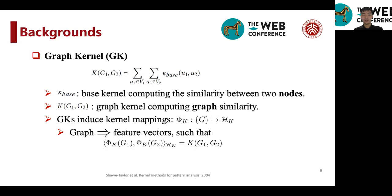For example, in the equation here, k(g1, g2) is the graph kernel, which is computed via summing up all the node kernels, k base (u1, u2).